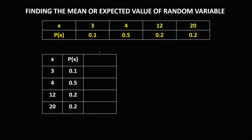For this column, we just need to multiply these two columns, so we have x times p(x). Then to find the values: 3 times 0.1, that's 0.3.